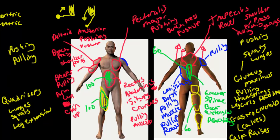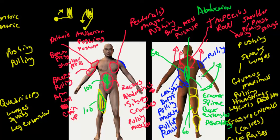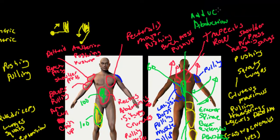Let's quickly cover abduction and adduction. If I take my arm and bring it away from the body — away from the center line — that is abduction. If I take that same limb and bring it back to the body, that is adduction. Abduction: taking away from the body. Adduction: adding it back to the body. That's how you work the middle portion of the deltoid — through abduction, taking the arm away.